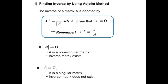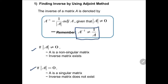One more thing to remember: A inverse is not 1 over A. Please remember that. Now, for the properties: if the determinant of A is not equal to 0, then A is a non-singular matrix, meaning the inverse matrix exists. If the determinant of A is equal to 0, A is a singular matrix, so the inverse matrix does not exist.